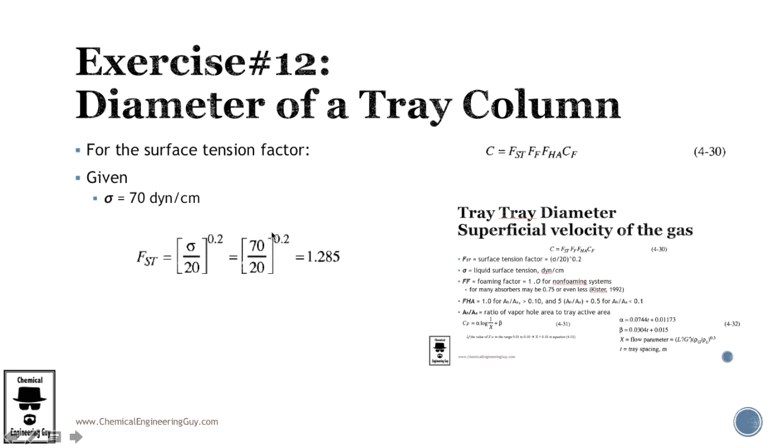Okay, first things first, we gotta calculate FST, surface tension factor. So, we got this expression, we know that 17 dynes per centimeter, we can plug it in directly, this 20 is based on those units, and then we get 1.285. What's next?